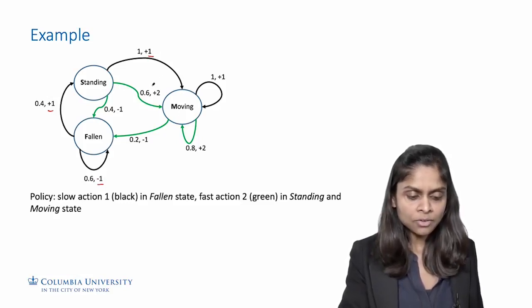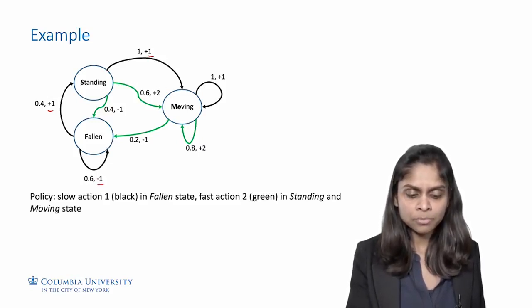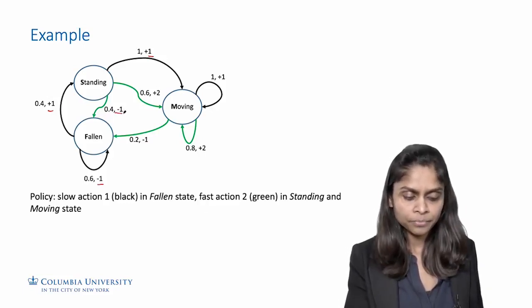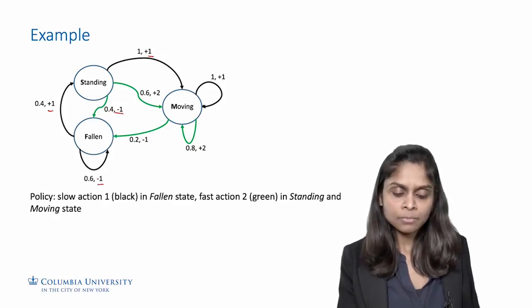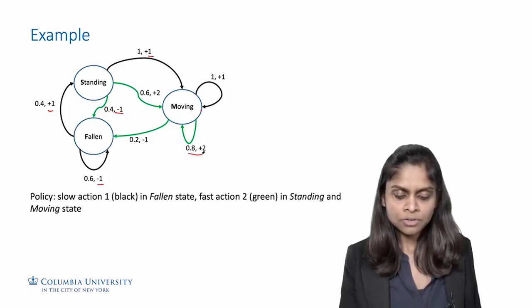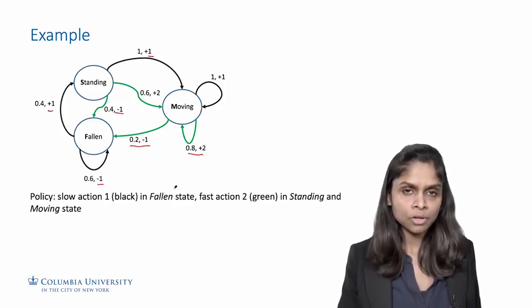On the other hand, the fast or aggressive action can earn more reward if it successfully transitions the robot to the moving state, but with 40% chance it may make the robot fall and get a reward of minus one. Similarly, in the moving state, the slow action is very reliable — it always earns a reward of plus one and keeps the robot in the moving state. Whereas the fast or aggressive action can earn more reward with 80% chance, but with 20% chance, it can make the robot fall and go to the fallen state.